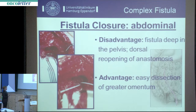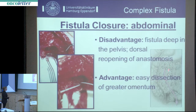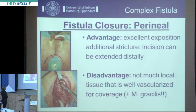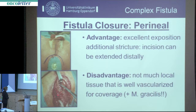For the abdominal approach, the disadvantage is that the fistula is on the backside of the anastomosis deep in the pelvis, requiring reopening of the anastomosis to close the fistula; however, it is easy to dissect and bring down the omentum as a flap. The perineal approach offers excellent access directly at the fistula site, but there is not much well-vascularized local tissue. A pedicle fat flap works only in non-irradiated patients; irradiated patients additionally need the gracilis muscle.